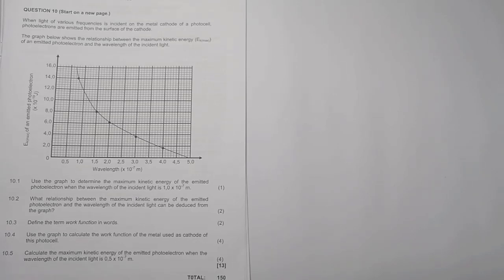This is on the photoelectric effect. So it says when light of various frequencies is incident on a metal cathode of a photocell, photoelectrons are emitted from the surface of the cathode. The graph below shows the relationship between the maximum kinetic energy of an emitted photon and the wavelength of the incident light. They say use the graph to determine the maximum kinetic energy of the emitted photoelectron when the wavelength of the incident light is 1.0 times 10 to the power minus 7.